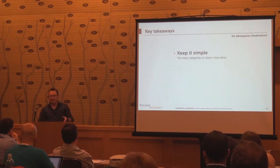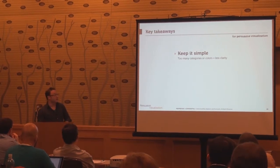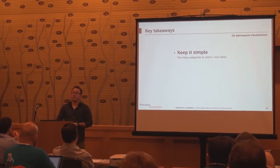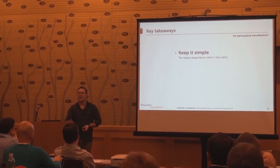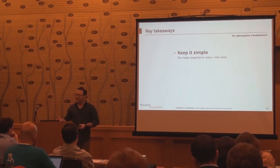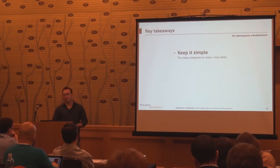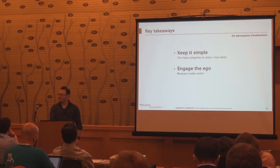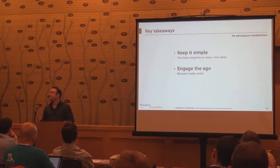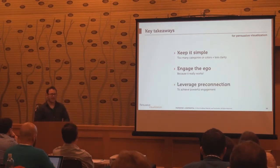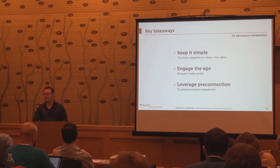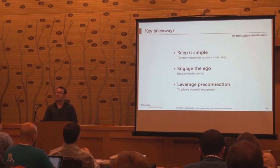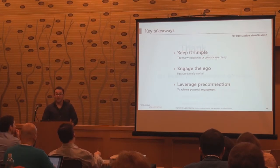More importantly, here are the key takeaways for persuasive visualization in general. Number one: keep it simple. Less is more — less colors, less categories, less charts unless you're doing small multiples. Keep it simple; think about legibility — so important. Number two: engage the ego if you can, because hopefully I've shown you it really works. It turns out we're all human, and there are basic psychological tenets we all predictably fall into. If you can creatively and in a fun way engage the ego, you're going to see lift — in response rates, engagement, gifts, participation, and energy devoted back to your organization. And finally: leverage pre-connection. This was a pretty stunning discovery for me — I really didn't put two and two together until we started launching event maps and started seeing the power of pre-connection.